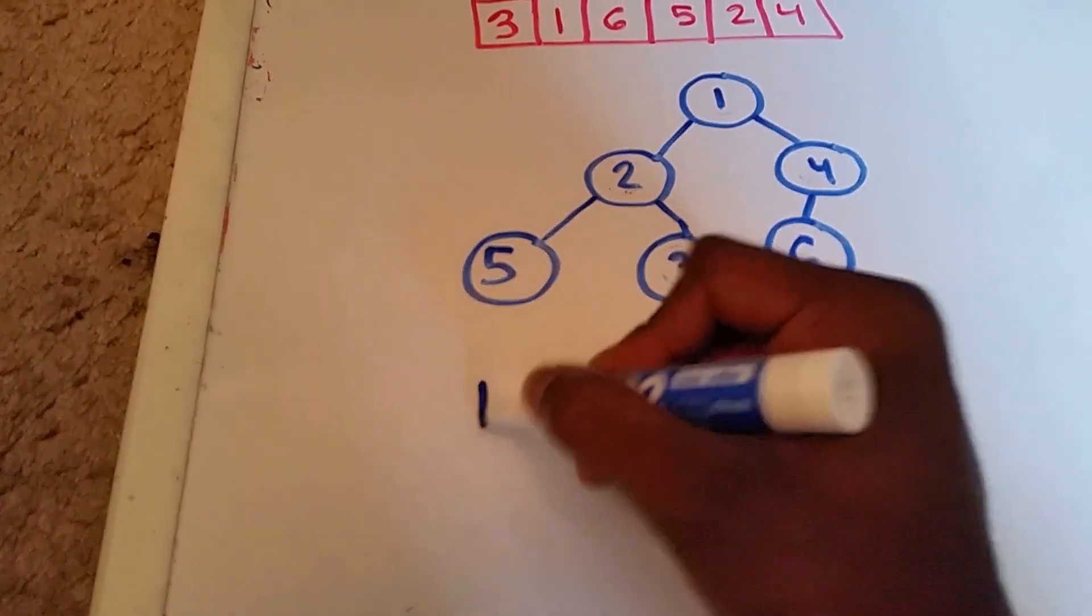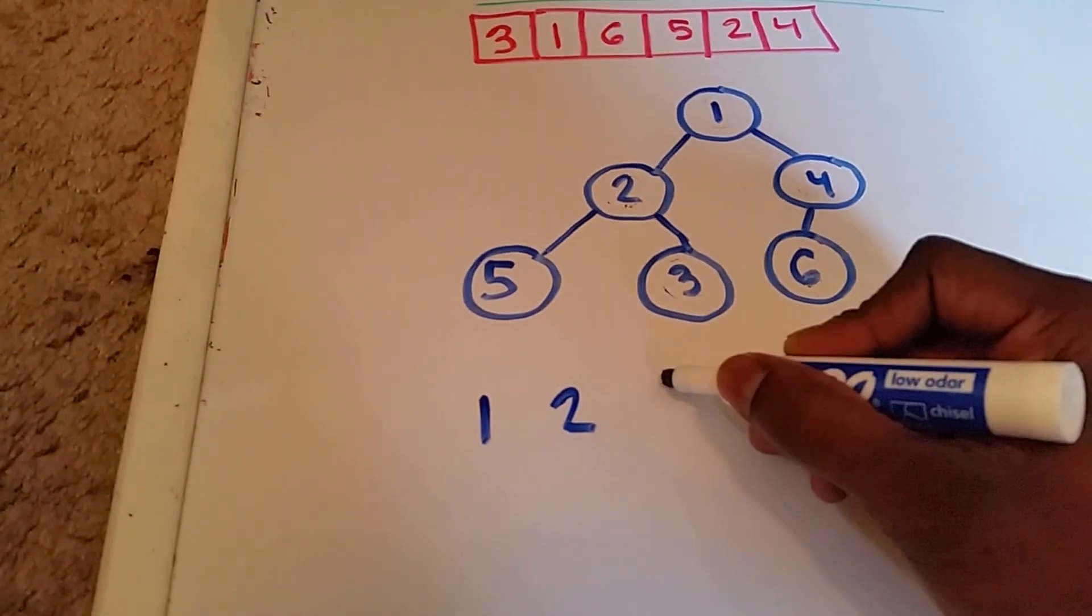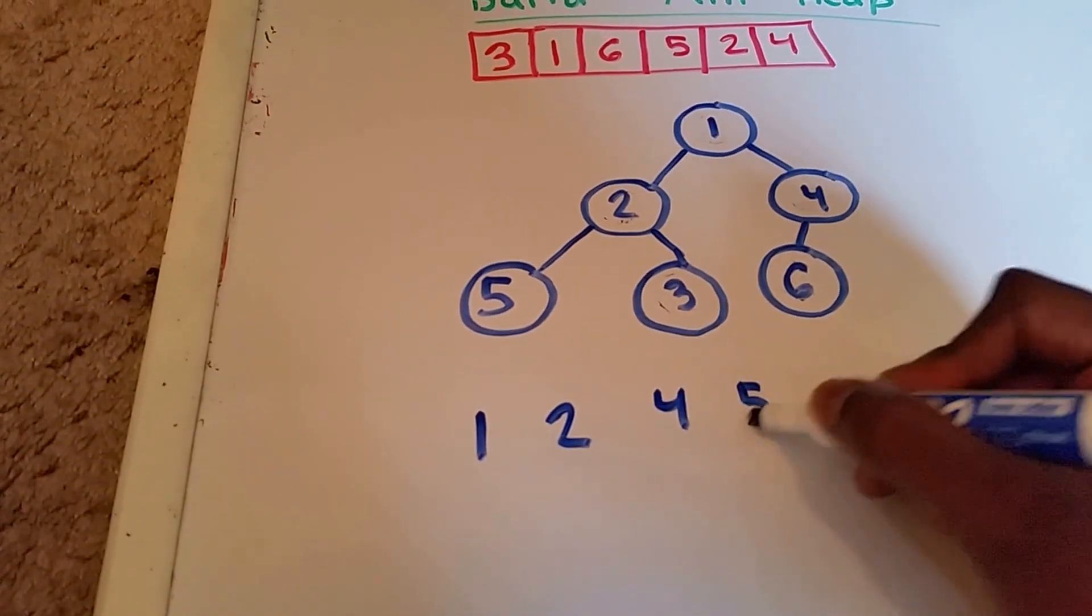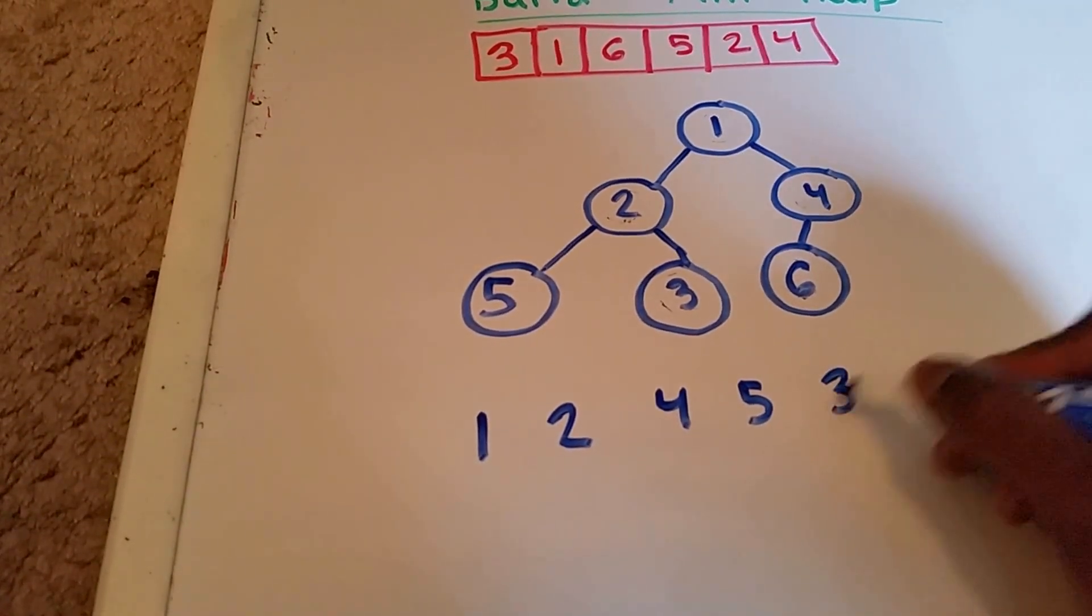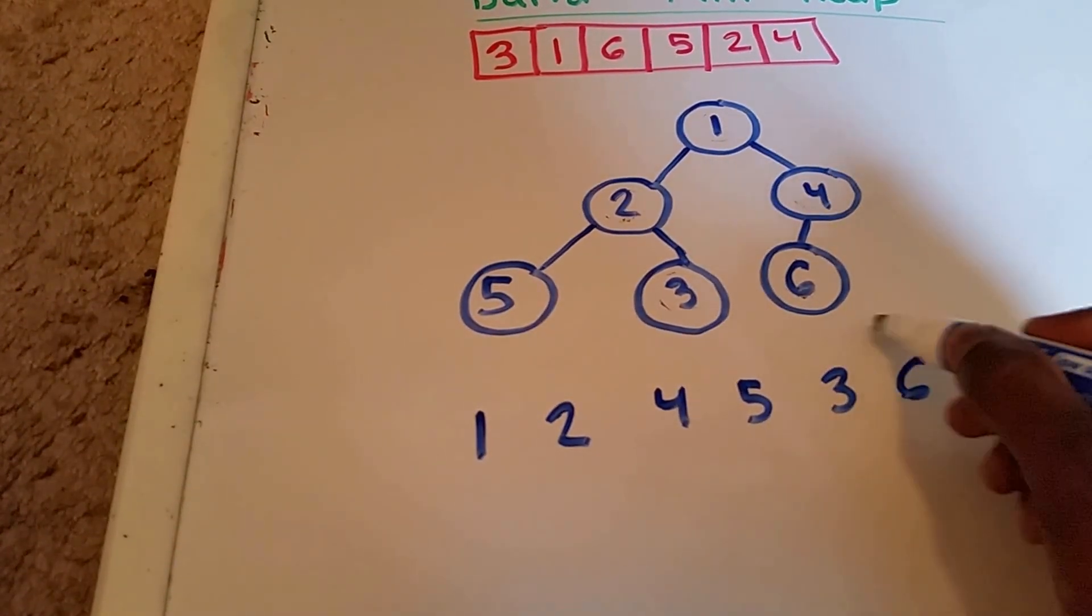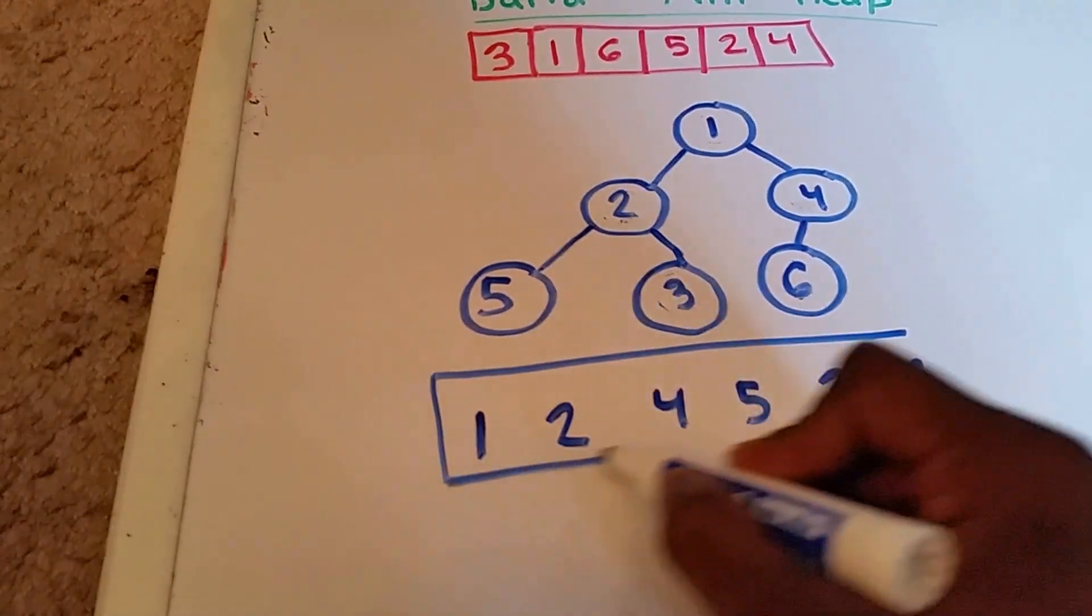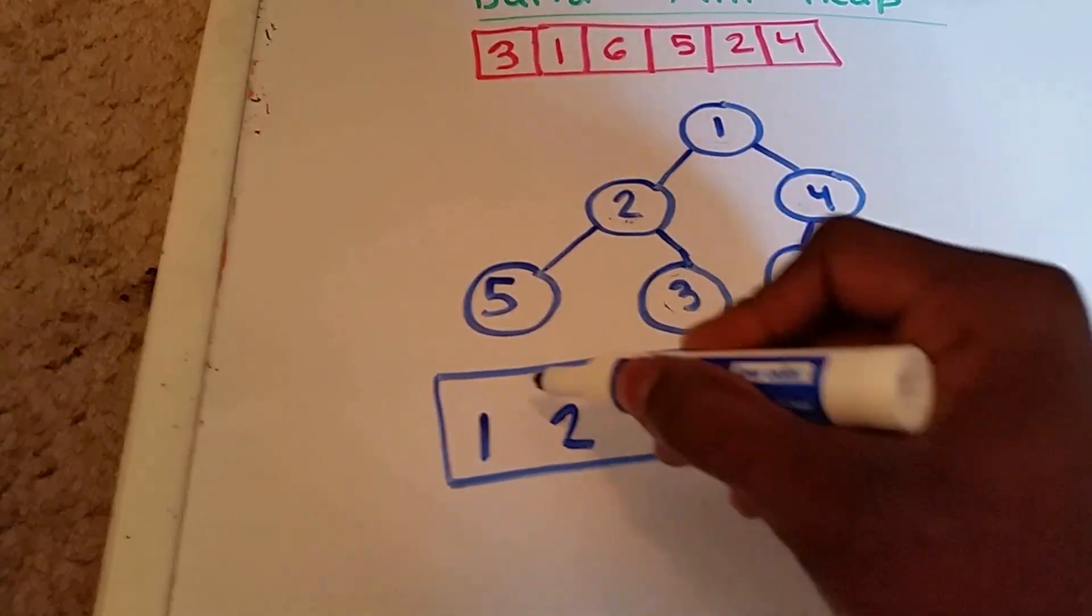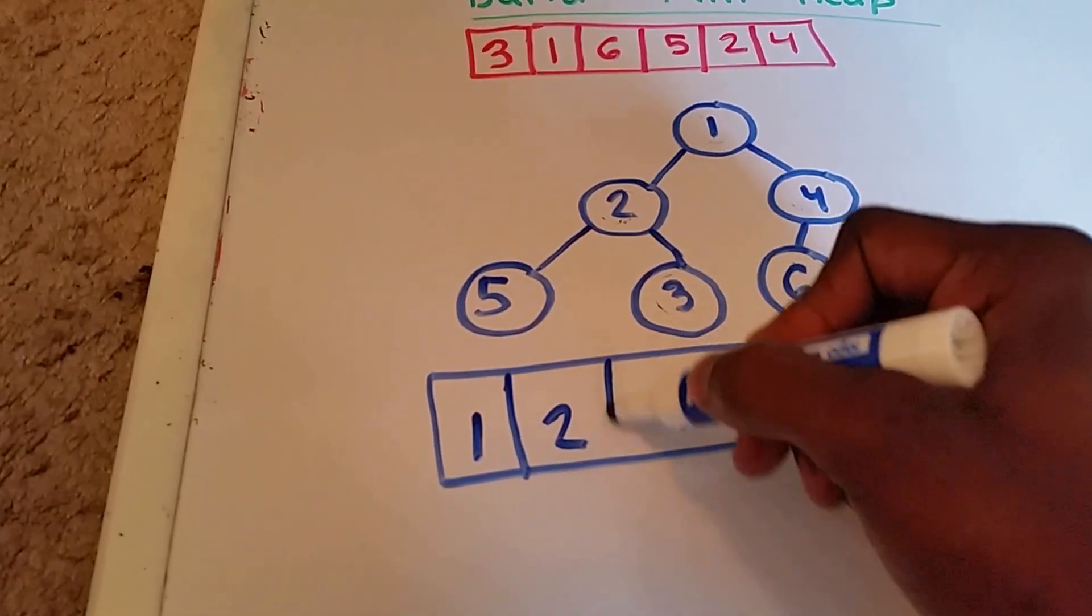It would be 1, 2, 4, 5, 3, and 6. So now this is how our heap looks as an array.